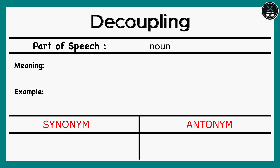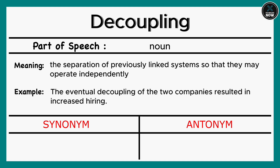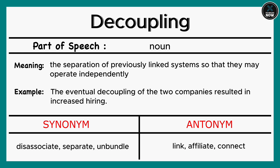Decoupling: The separation of previously linked systems so that they may operate independently. Example: The eventual decoupling of the two companies resulted in increased hiring. Synonyms: Disassociate, Separate, Unbundle. Antonyms: Link, Affiliate, Connect.